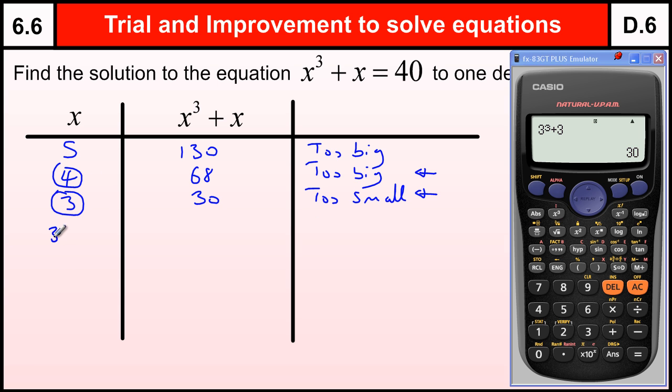So I know the answer's between 3 and 4 now. So I'm going to go 3.5 and see what that gives me. So 3.5 cubed plus 3.5 gives me 46.375, which is too big. So I'm just going to come down one decimal place to 3.4. So 3.4 cubed plus 3.4 is 42, still too big.